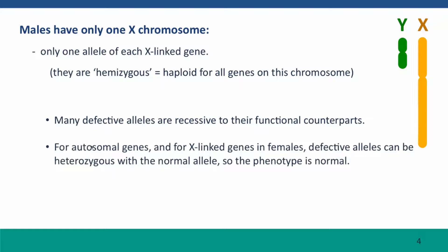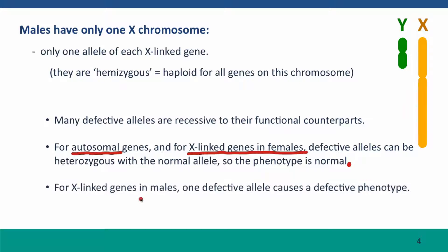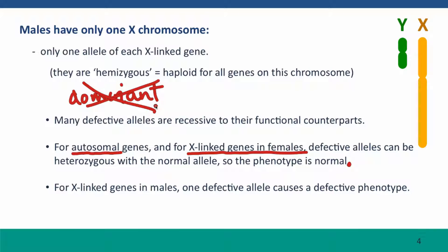For genes on autosomes or on the X chromosome in females, defective alleles can often be heterozygous with the normal allele and the phenotype will be normal. But in males, for X-linked genes, one defective allele is all you have. So one defective allele always causes a defective phenotype. The concept of dominant doesn't apply to X-linked genes in males.